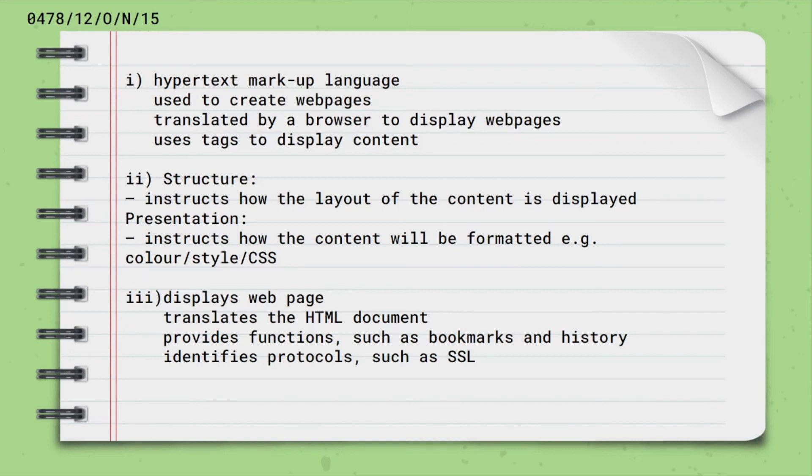The last subdivision explains function of web browser. And that has four points in the marking scheme, but you actually need to write down only three. They are: they display web pages, they translate HTML document, they provide function and identify protocols. Examples are not considered as an extra point. In first question, we wrote HTML is translated by a browser to display web pages. And now in the last subdivision, we are writing browser translates HTML document. So understand that all questions are interconnected.